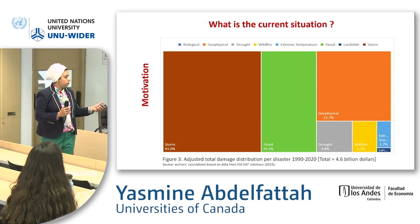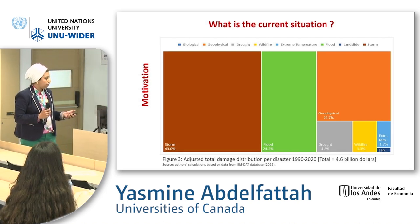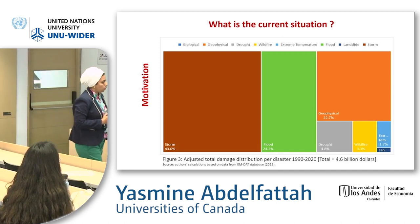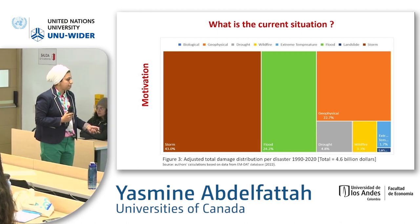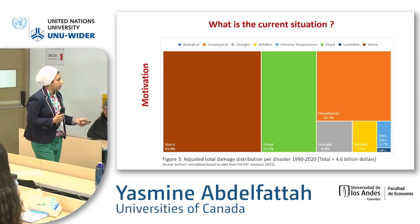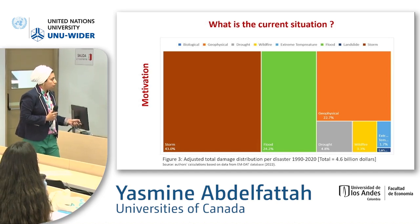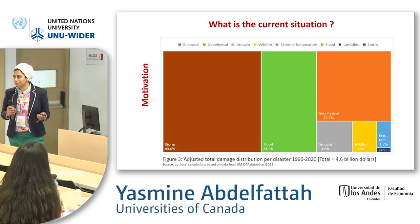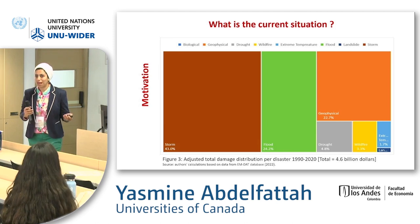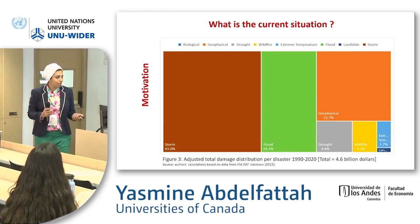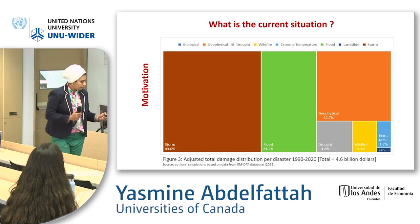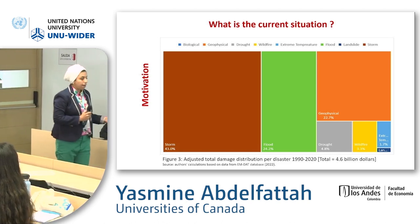Our third focus is total damage in dollars. The world has paid $4.6 billion for all these disasters. Storm moves up to the most damaging — we saw what happened in Florida a couple of days ago. Floods remain persistent, followed by geophysical events and drought.